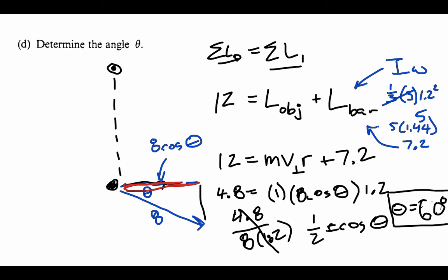And so that's an example of doing an angular momentum problem. The key things to notice are what conservation statements we can and can't use, and when we can apply them — kinetic energy conservation during the collision, mechanical energy conservation during the swing, and angular momentum conservation during the collision.